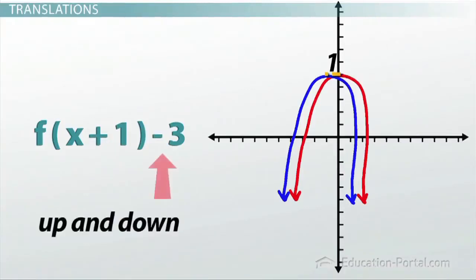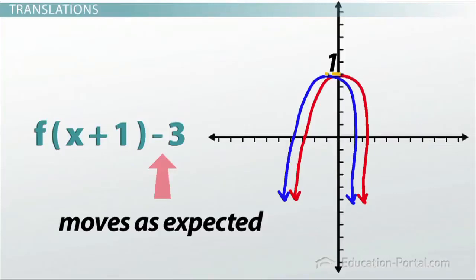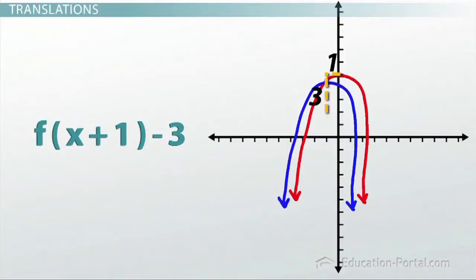that means the plus one will shift everything in the graph one to the left. The negative three on the outside represents the up-down shift and follows the pattern you'd expect, which means it'll pull the entire graph down three spots, which makes our new graph look like this.